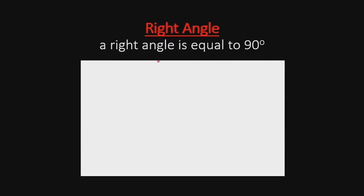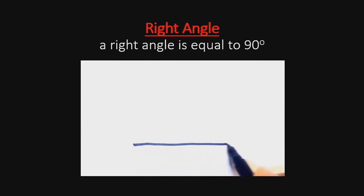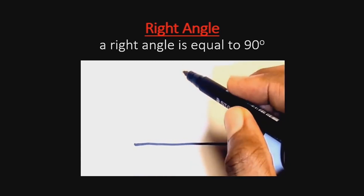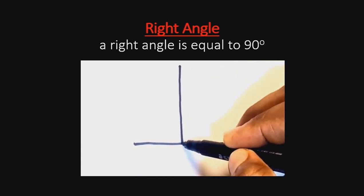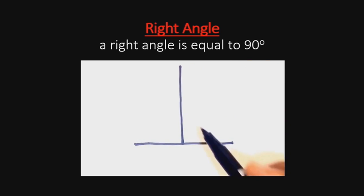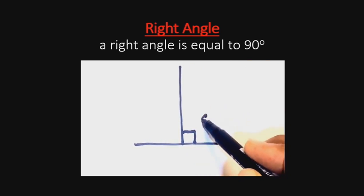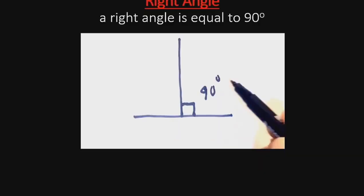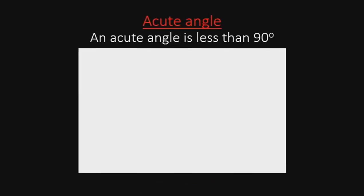The first type of angle we are considering today is a right angle. A right angle is an angle equal to 90 degrees. If we have a horizontal line and a vertical line that is perpendicular to it, the angle formed between the horizontal and the vertical is 90 degrees.